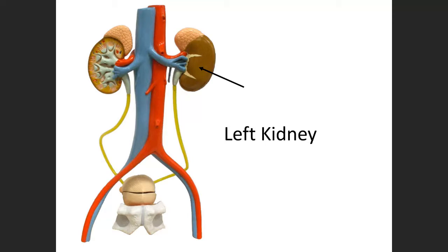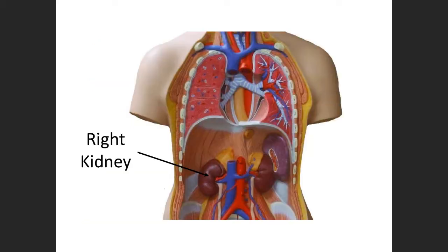This model is showing you part of the circulatory system and also part of the urinary system. Here's the kidney. Remember, if you see a tube-like structure and it's red, most likely it's an artery. If you see a tube-like structure and it's blue, most likely it's a vein. Here's a tube-like structure but it's yellow — your pee is yellow. So use color to help you out. Here's the right kidney.